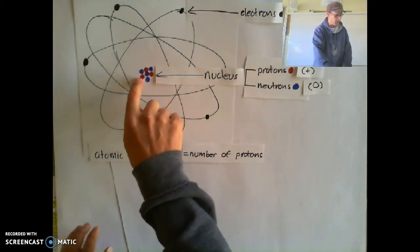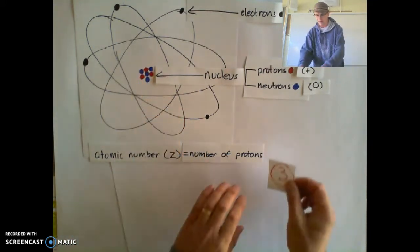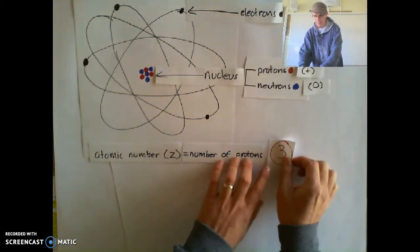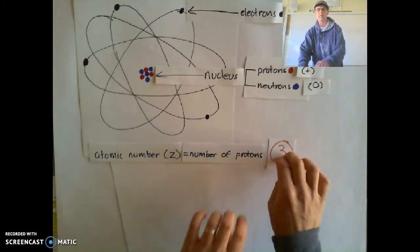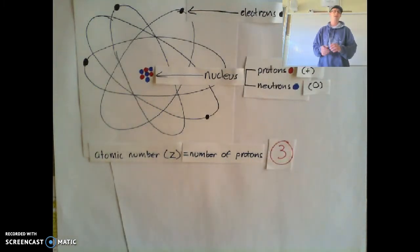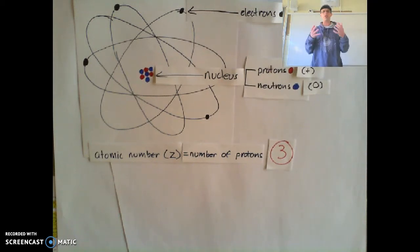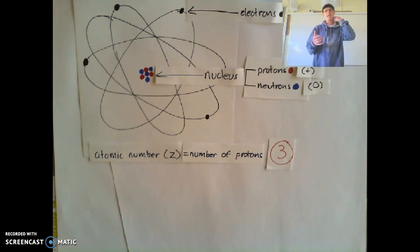Counting up the protons — one, two, three. So three protons means I have an atomic number of three. The atomic number is super important because the number of protons in an atom tells us what kind of atom it is, what element it is.